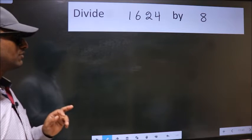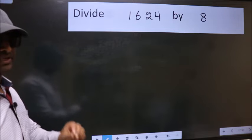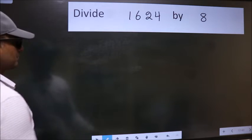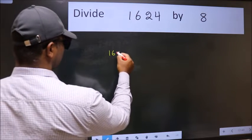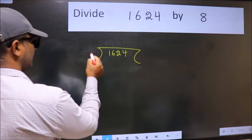Divide 1624 by 8. To do this division, we should frame it in this way. 1624 here, 8 here.